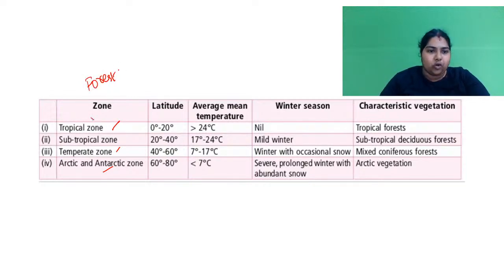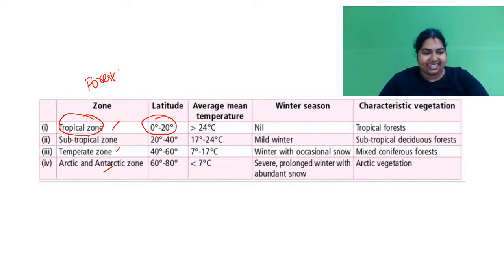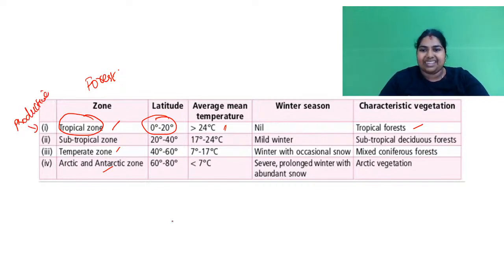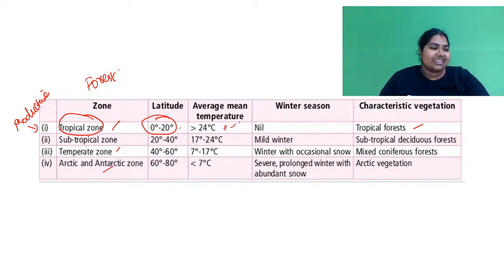If you take your tropical zone, it is located at a latitude of somewhere around 20 degrees. The average temperature is quite high — greater than 24 degrees centigrade. Your tropical forests come under this region, and you might know that the tropical zone is going to be the most productive region, because you get quite a good amount of temperature and good rainfall also. So it has all the favorable conditions, and obviously ecological productivity is quite high in your tropical zone.